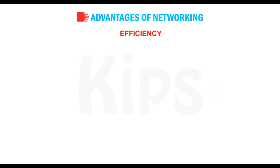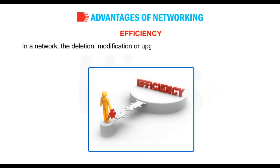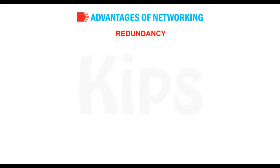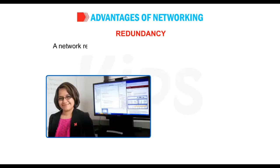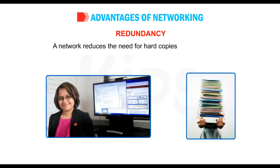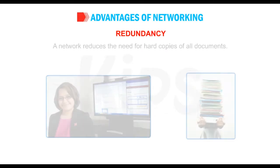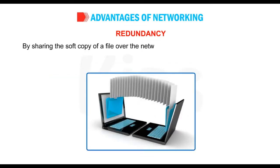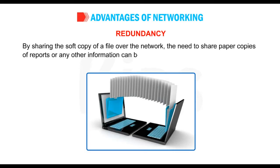Efficiency: in a network, the deletion, modification or upgradation of the software or data is to be done at a single point only. This brings more efficiency and effectiveness into the working system. Redundancy: a network reduces the need for hard copies of all documents. By sharing the soft copy of a file over the network, the need to share paper copies of reports or any other information can be eliminated or greatly reduced.